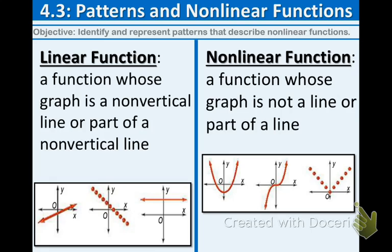Contrary to linear is nonlinear. A nonlinear function is one whose graph is not a line or part of a line. As you can see below, there are three examples: the first one is a curve called a parabola, the second one is a cubic function, and the third one is an absolute value function. All three of those are nonlinear because they do not graph like a line.